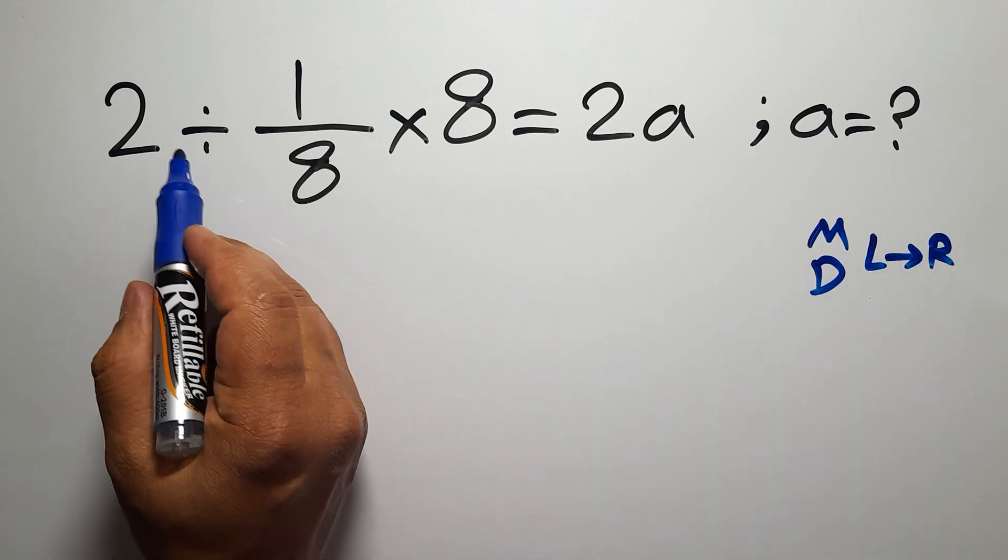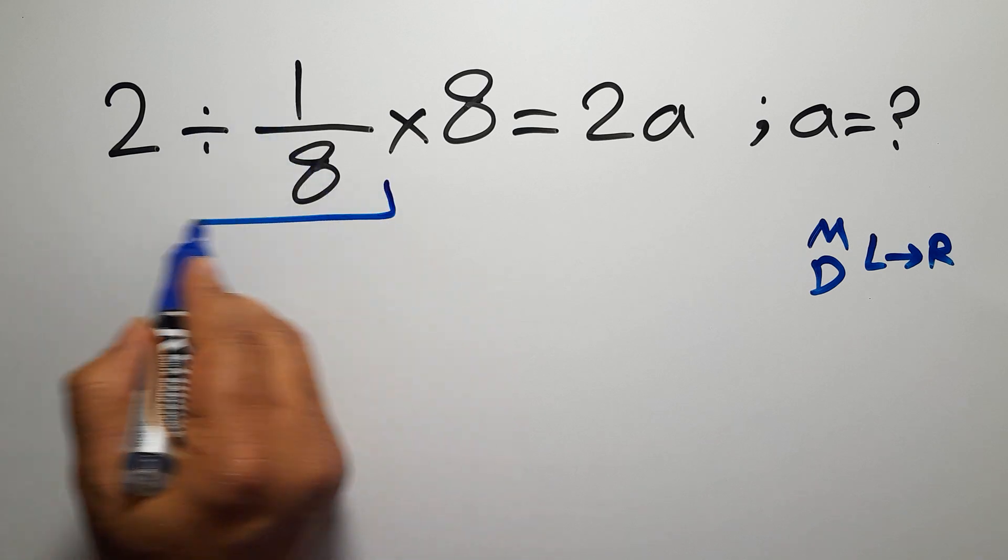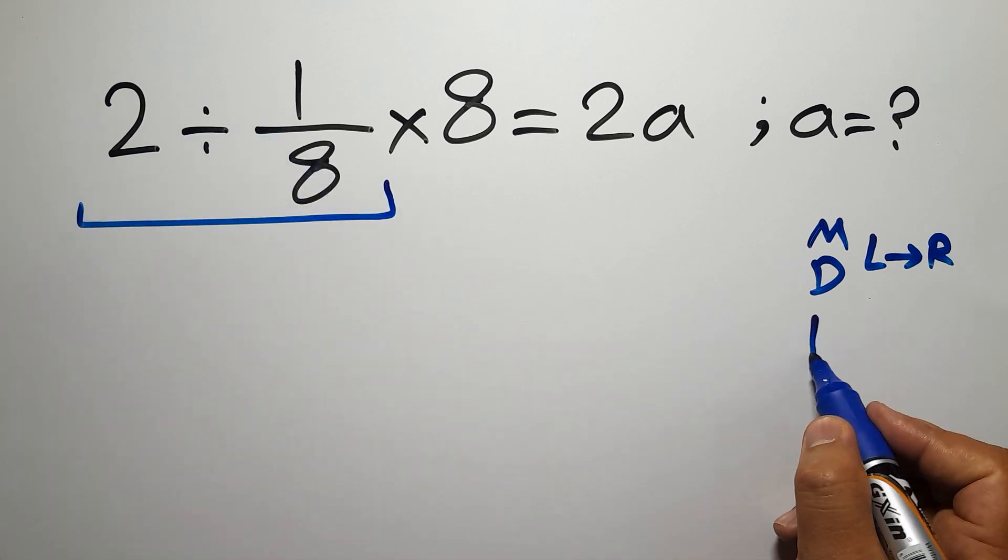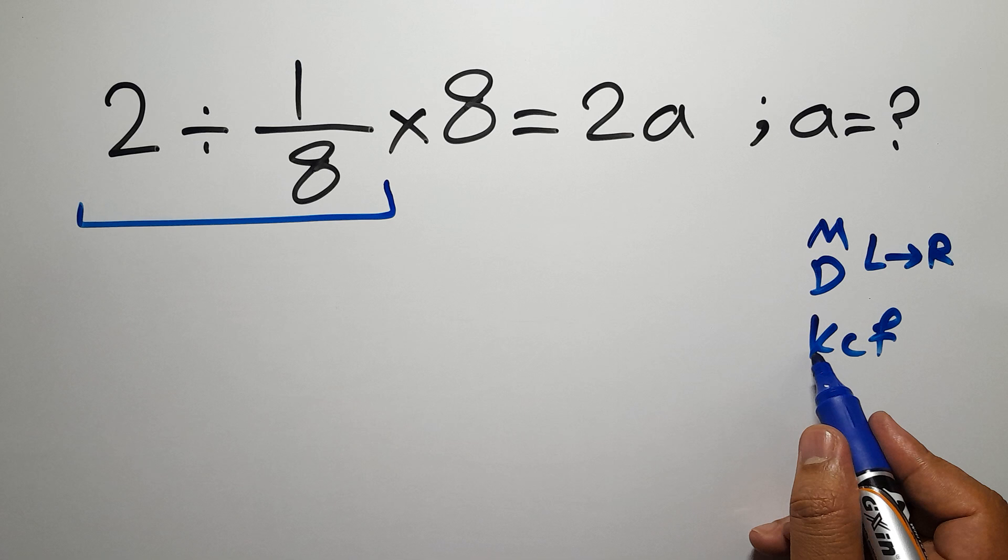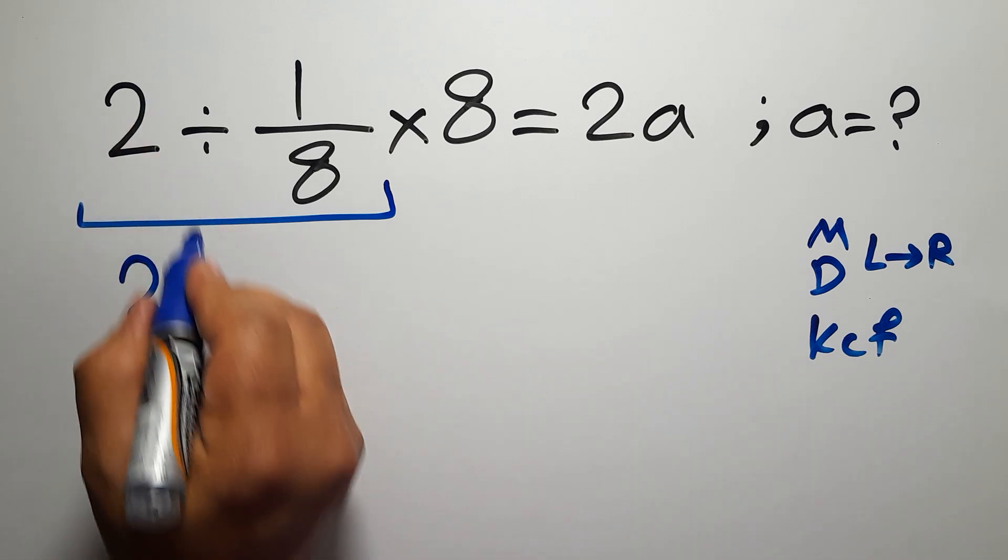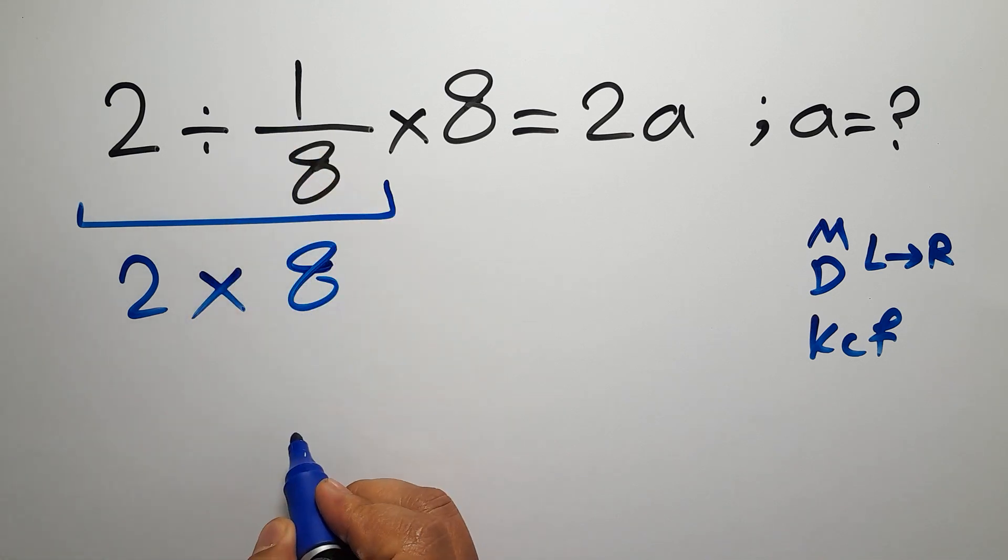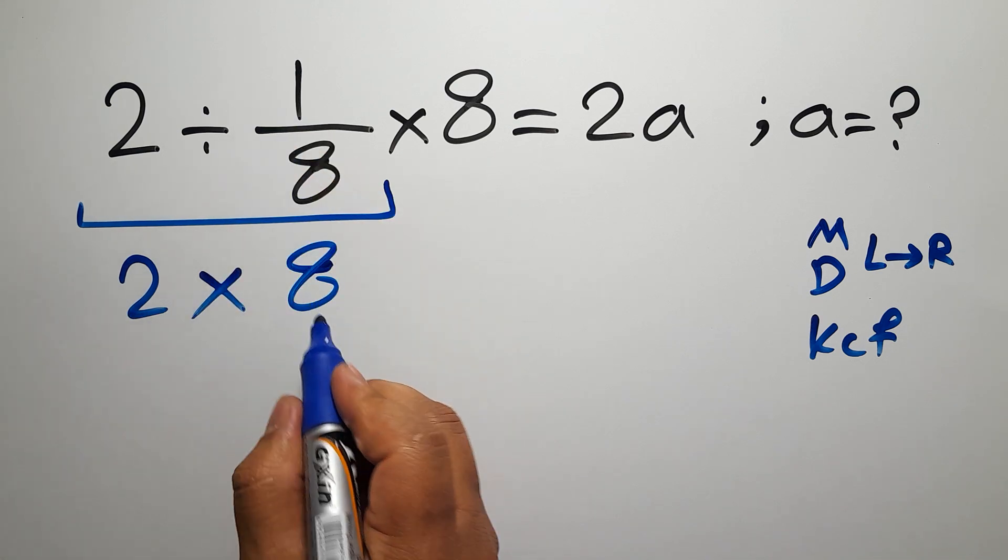So first, we have to do this division: 2 divided by 1 over 8. According to the KCF rule, K stands for keep, C stands for change, and F stands for flip. Keep the first fraction, change division to multiplication, and flip the second fraction. So we have 2 times 8,